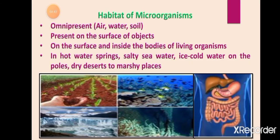The next topic is the habitat of microorganisms. Microorganisms are omnipresent — they are present everywhere: in air, water, soil, on the surface of objects, on the surface and inside the bodies of living organisms. They are also found in hot water springs, salty sea water, ice-cold polar water, dry deserts, and marshy places — meaning they can survive in very extreme conditions.